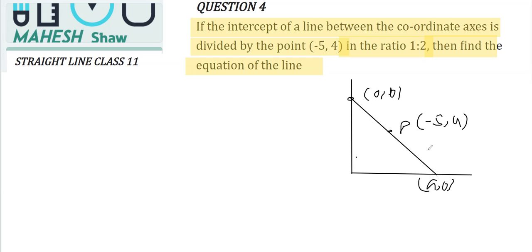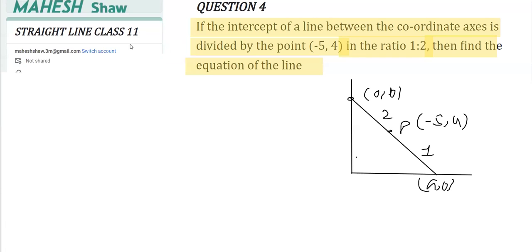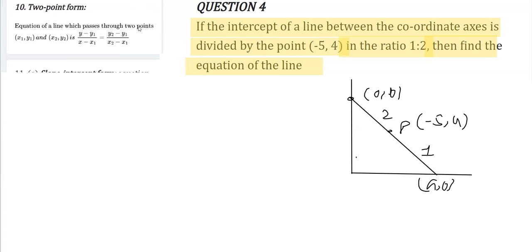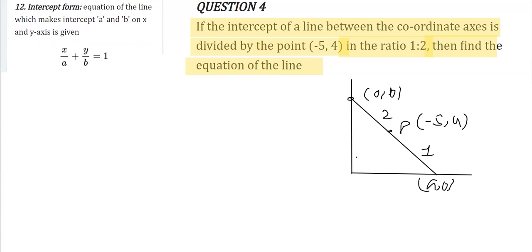First it should be the x and then the y. So we can say it's given 1:2, so we'll be writing this as 1 and this as 2. And we are going to use this intercept form for finding the equation. Let me show you the intercept form.